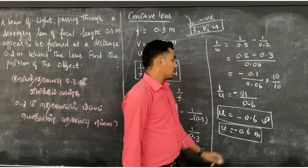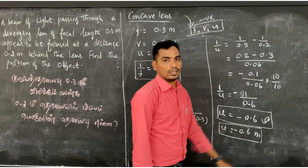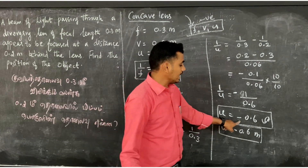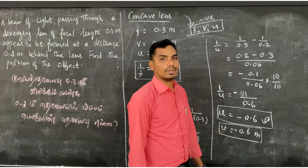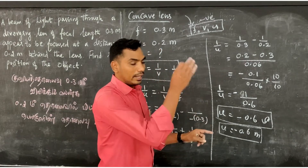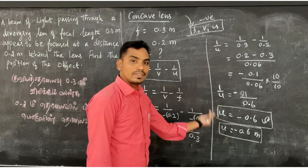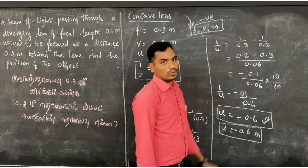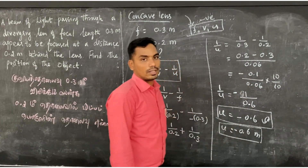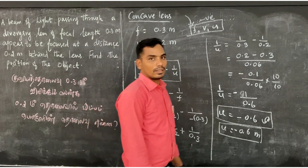The result of 0.6 with a minus sign indicates that the object is located on the left side of the lens. This is the final answer. Thank you.